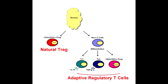So basically, as their name suggests, they regulate the immune system and make sure that it does not go crazy. One additional thing to note about regulatory T-cells is that they express CD3, CD4, and CD25 as cell surface markers.